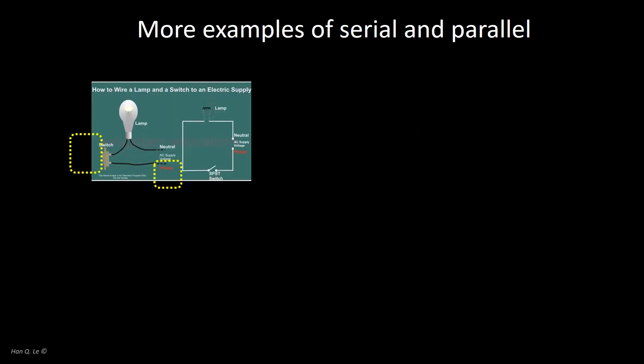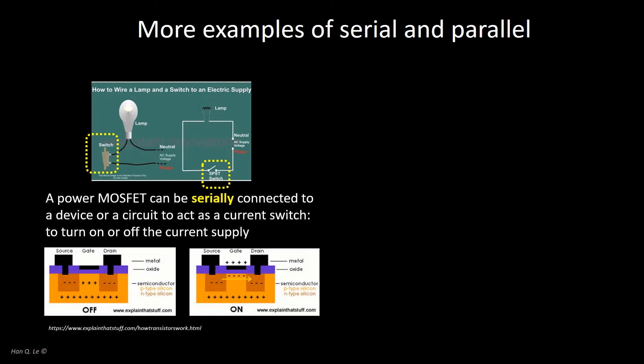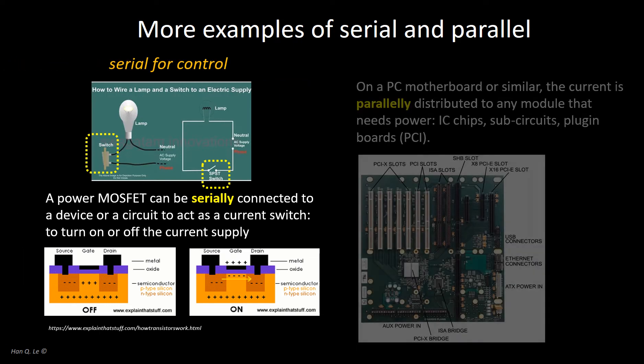A switch on the wall has to be in series with an appliance, such as a light, so that it can control the current on-off to the device. Similarly, a transistor known as power MOSFET can be put in series with any device or circuit to control the current supplied to that device or circuit. Hence, a function of the serial configuration is for control.